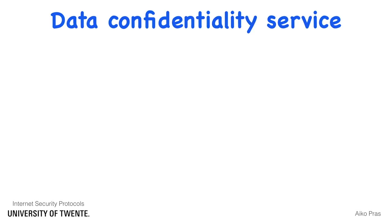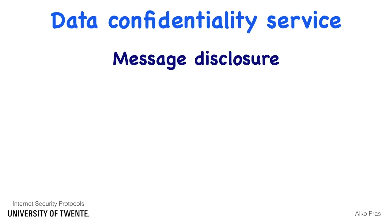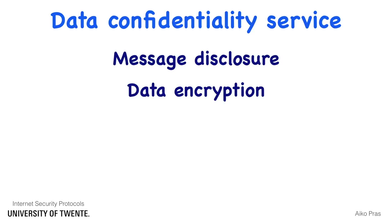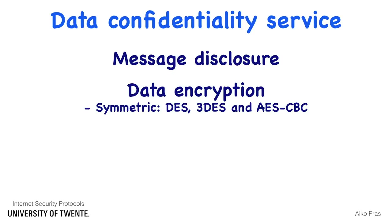Data Confidentiality is a security service that protects against message disclosure attacks. A common mechanism to implement data confidentiality is data encryption. Encryption algorithms can be divided into two categories. The first category is symmetric encryption, where both parties share the same encryption key. Examples of symmetric encryption algorithms include DES, triple DES, and AES-CBC.